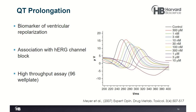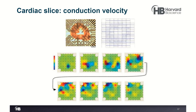MEA technology can also be adapted for cardiac slice preparations. With rodent cardiac slices attached to a microelectrode array, you can see the slice on the MEA, the responses from cells on the slice, and a sequence showing conduction velocity — with beats beginning in one corner of the slice and propagating across as a function of time.